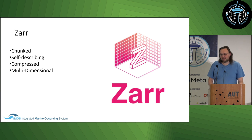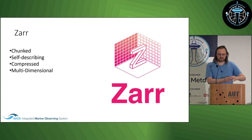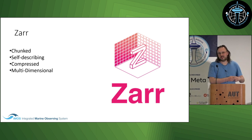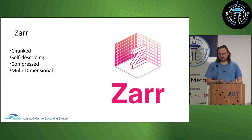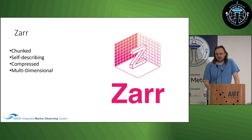With Zarr, scientists can access data directly with Python. Zarr is a chunked format — you choose a particular parameter, put all the data for that parameter together, and chunk it, say, by 100 days. Each chunk of 100 days is its own little piece. If you know the format and what's in the data, you know which chunk you need and only access that chunk. Zarr is self-describing, containing all the metadata needed to understand the file itself. It's also compressed, so it's pretty efficient.